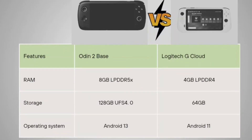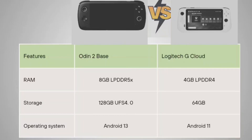RAM is 8GB LPDDR5X for your Auden 2 Base and your Logitech G Cloud is giving you 4GB LPDDR4. Storage is 128GB UFS 4.0 in your Auden 2 Base and 64GB in your Logitech G Cloud. Operating system is Android 13 in the Auden 2 Base and Android 11 in the Logitech G Cloud.